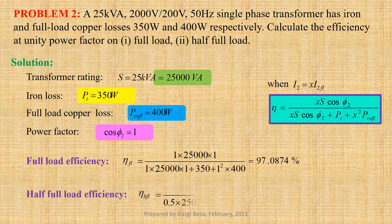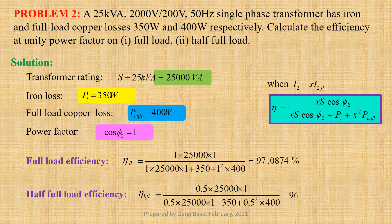Half load efficiency: ETA at 0.5 load equals to 0.5 into 25,000 into 1 divided by 0.5 into 25,000 into 1 plus 350 plus 0.5 squared into 400, that gives us 96.5251 percent.